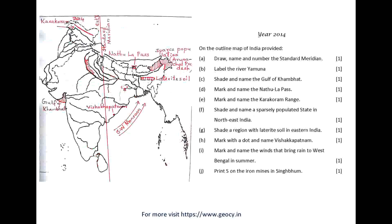Year 2014. On the outline map of India provided: A. Draw, name, and number the Standard Meridian. B. Label the River Yamuna. C. Shade and name the Gulf of Khambat. D. Mark and name the Nathu La Pass. E. Mark and name the Karakoram Range. F. Shade and name a sparsely populated state in northeast India. G. Shade a region with laterite soil in eastern India. H. Mark with a dot and name Visakhapatnam. I. Mark and name the winds that bring rain to West Bengal in summer. J. Print S on the iron mines in Singhbhum.